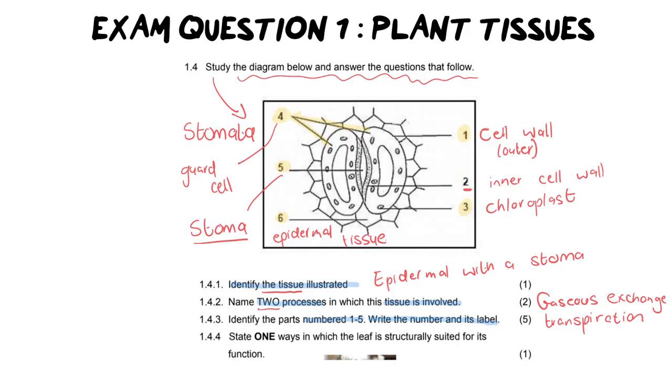Last but not least, it says state one way in which the leaf is structurally suited for its function. You have to know the functions of the leaf before you can even answer this question. Please, they are not asking for the function of the leaf. They are asking how is it structurally suited? So what about its structure allows it to do its function? There are so many things. But the first one that should pop into your head is photosynthesis. So how is the leaf adapted to make photosynthesis work well and be efficient?